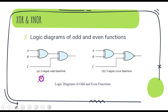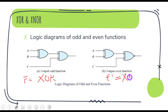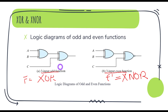Here is the circuit diagram of the XOR function, and this is the circuit diagram of F-dash which is XNOR. You can see the three-input odd function and the three-input even function. For XNOR, we simply add a NOT gate at the end of the XOR circuit.